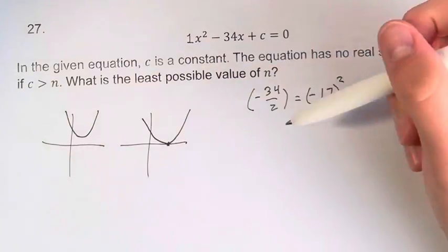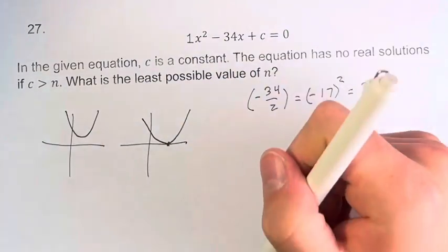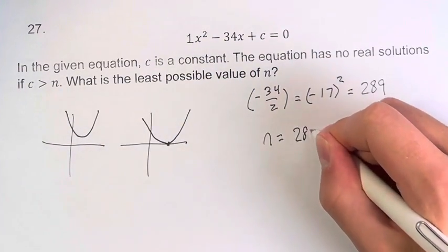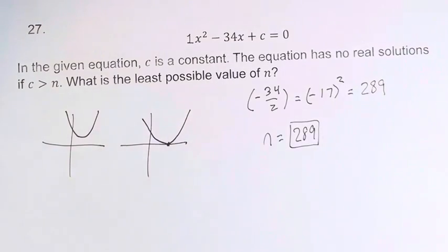When c is greater than 289, there are no real solutions. Therefore, n is the least possible value of 289, and that's your final answer.